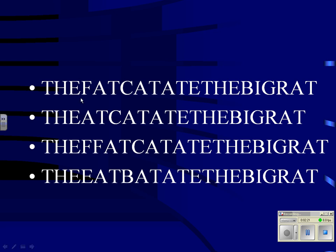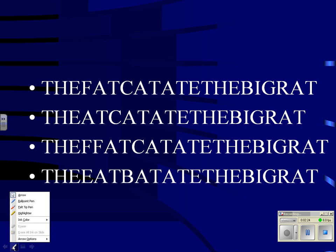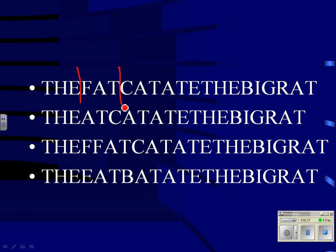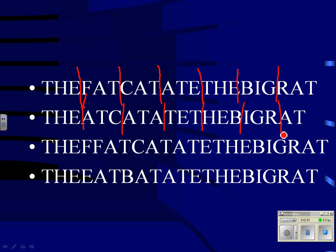We divide it into sets of three to read: 'The fat cat ate the big rat.' Now, let's say you were copying this down fast and you made a mistake — the F didn't get copied. So if we divide the result into thirds, we get nonsense: 'the ek at a tet heb ager ek.' It doesn't mean anything. This is no longer a sentence we can read.